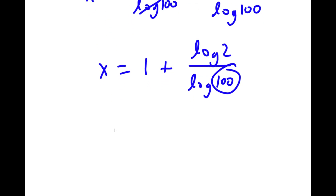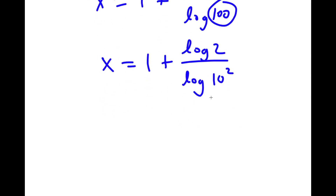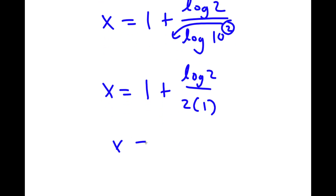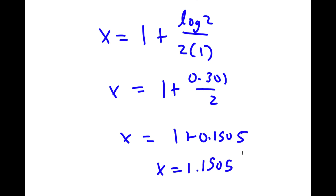Log 100 over log 100 cancels to 1. Now 100 is the same as 10 squared, so I have x is equal to 1 plus log 2 over log of 10 squared. Moving the exponent to the front gives 2 times log 10, and log 10 is simply 1. Log 2 equals 0.301, so I have 1 plus 0.301 over 2, which equals 1 plus 0.1505, which is equal to 1.1505. So this is my answer.